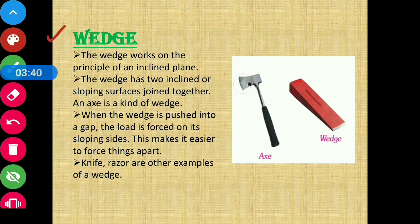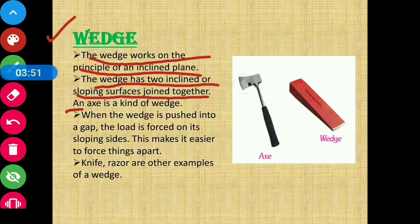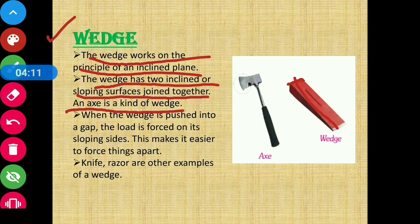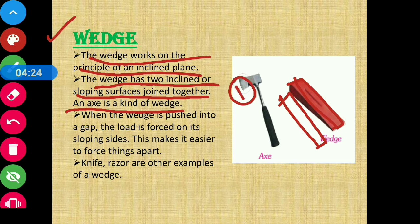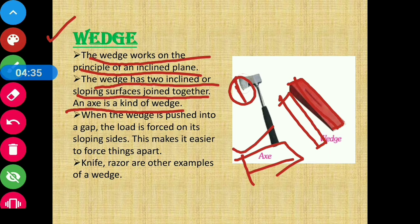Another simple machine is wedge. The wedge works on the principle of an inclined plane. The wedge has two inclined or sloping surfaces joined together. An axe is a kind of wedge. Wedge mein kya hota hai — inclined plane ki case mein hamare paas sirf ek plane hoti hai jo tilted hoti hai. Ab wedge mein there are two inclined planes — here is one inclined plane and below there is another inclined plane. Yeh dono inclined planes milke ek sharp ending create karte hain, jise hum wedge ke roop mein use kar sakte hain. Axe is an example of wedge.